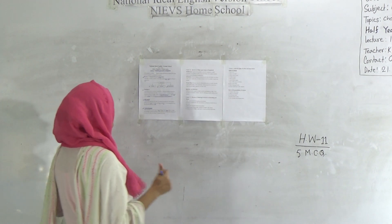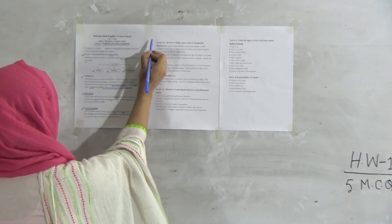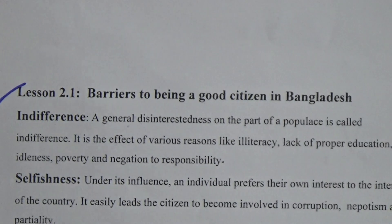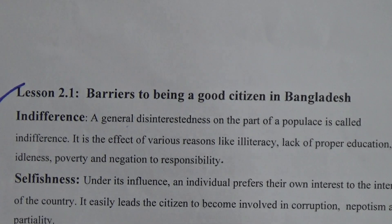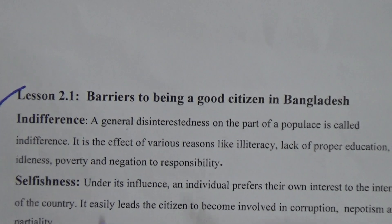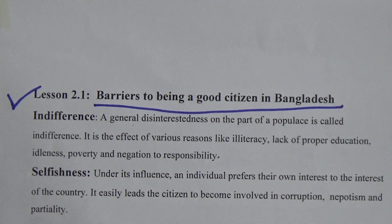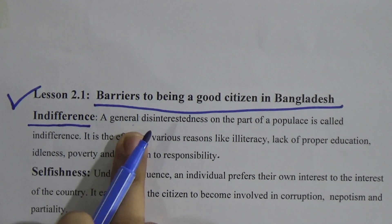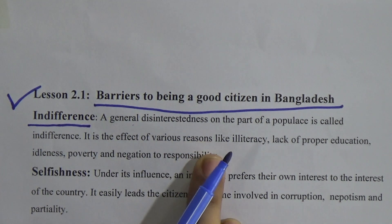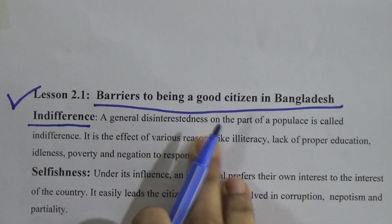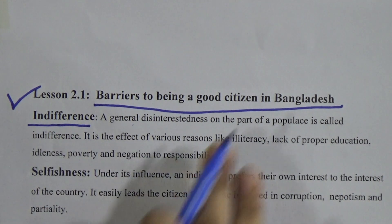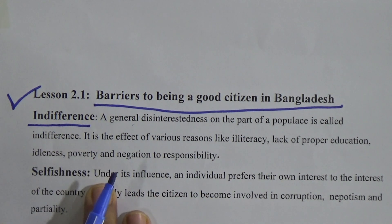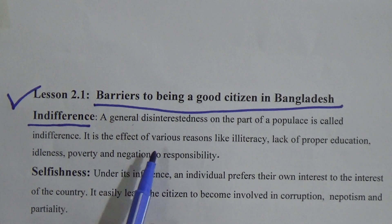Going to the next page, we will find lesson 2.1. Here we will discuss the barriers to being a good citizen in Bangladesh. As we know, good citizens have three characteristics, but there are some barriers by which we cannot become a good citizen. The first barrier is indifference — a general disinterestedness. A general disinterestedness on the part of a populace is called indifference. When a person is not interested in something, that quality or characteristic is called indifference.